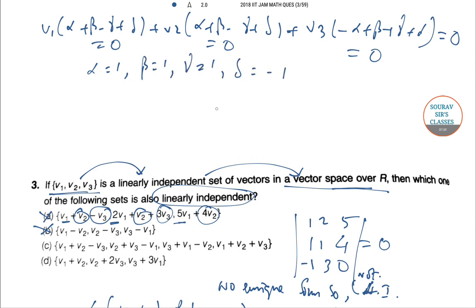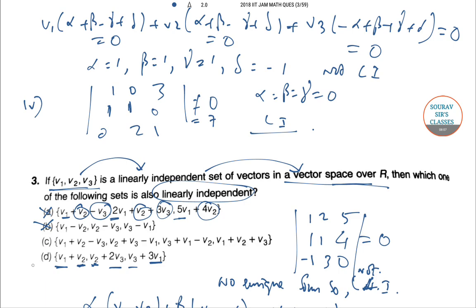Last one is v_1 + v_2, 2v_1, and v_3 + 3v_2. We can write the determinant as 1, 0, 3; 1, 0, 3—v_1 and v_2's coefficients. This determinant is 7, not equal to 0. So the equations have only the trivial solution α = β = γ = 0. Hence they are linearly independent. So only this structure gives the linearly independent form.